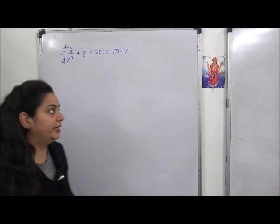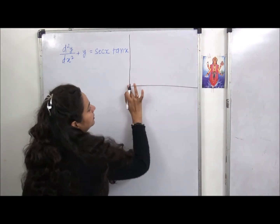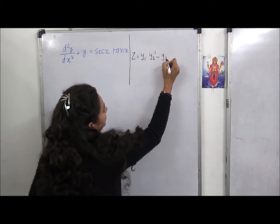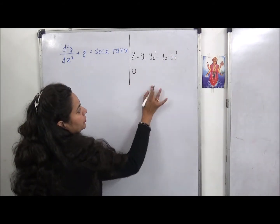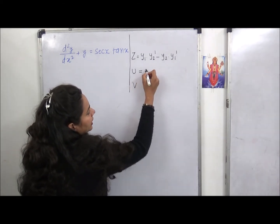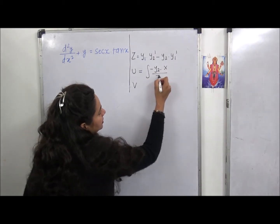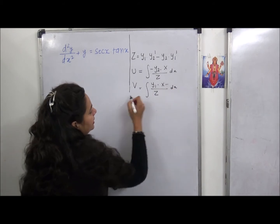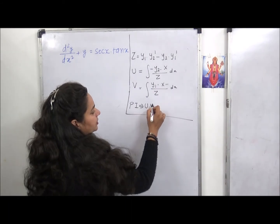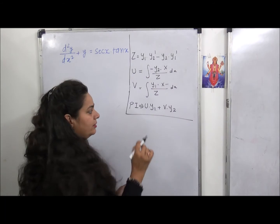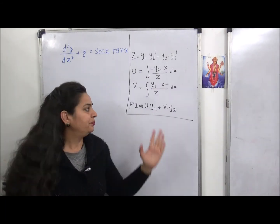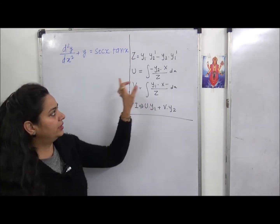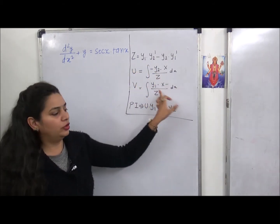We will remember three formulas. First formula: z = y1·y2' − y2·y1'. Then we need to find u and v. The formula for u is the integration of (−y2 · X) / z dx, and v is the integration of (y1 · X) / z dx. The final answer (particular integral) is u·y1 + v·y2. Note that the denominator z is the same for both u and v.